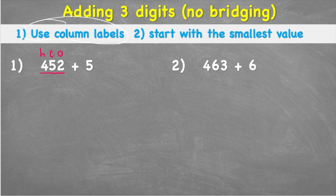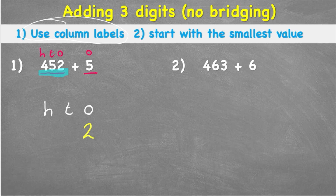We're adding 452 to a 5, which is only in the ones column. When setting up my place value chart, I'll put hundreds, tens, and ones — we have nothing bigger than hundreds and nothing smaller than ones. Starting with 452: the 2 goes in the ones column, the 5 goes in the tens column, and the 4 goes in the hundreds column.